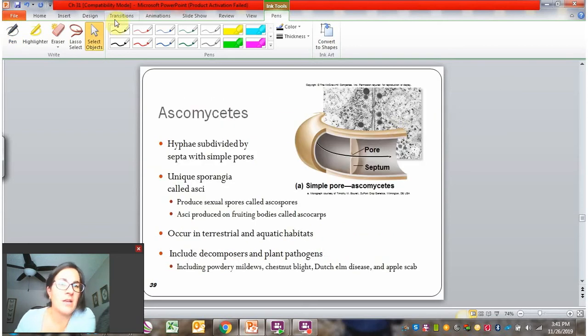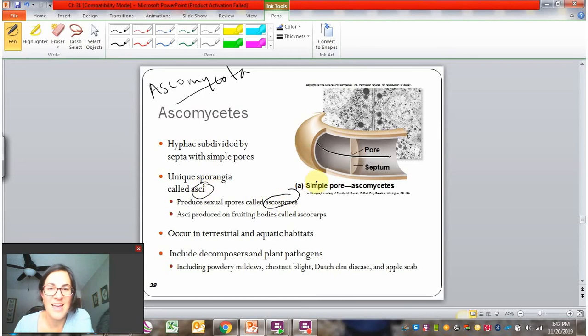So ascomycetes, also more commonly referred to as ascomycota, you'll see both of those terms. They have septa dividing their cells. And then they have unique sporangia in their sexual life cycle called asci, and they produce sexual spores called ascospores. And their fruiting bodies are called ascocarps. So notice that their sexual structures all use this same root, asco, making it hopefully relatively easy to memorize the relationship between these structures and the phylum they belong to.